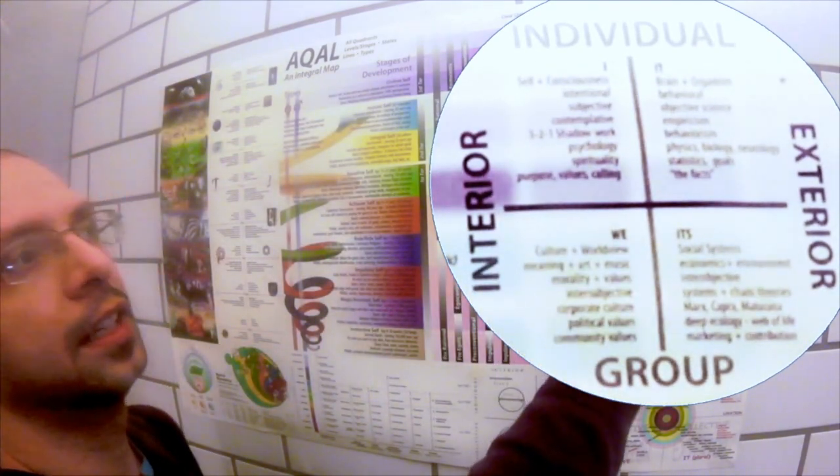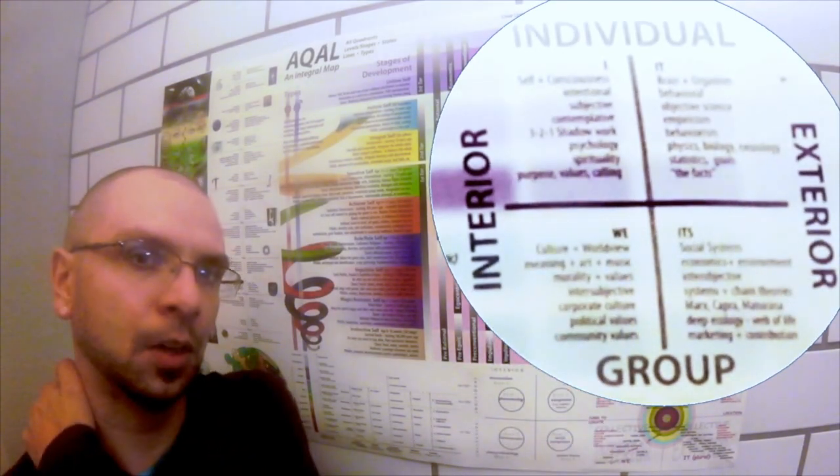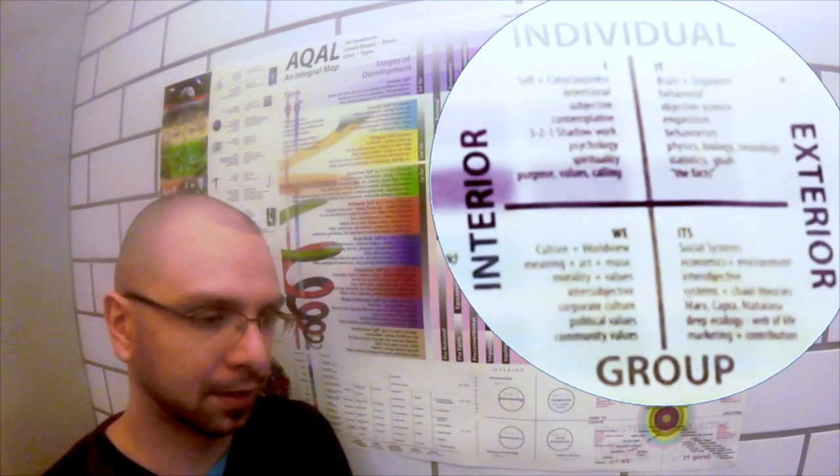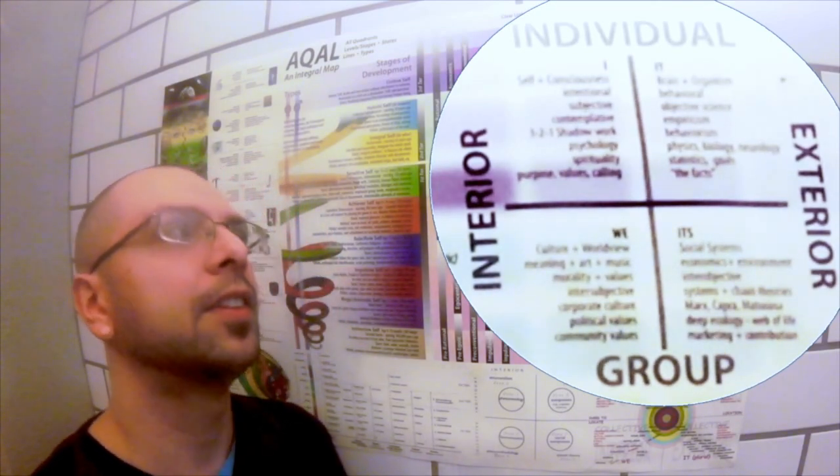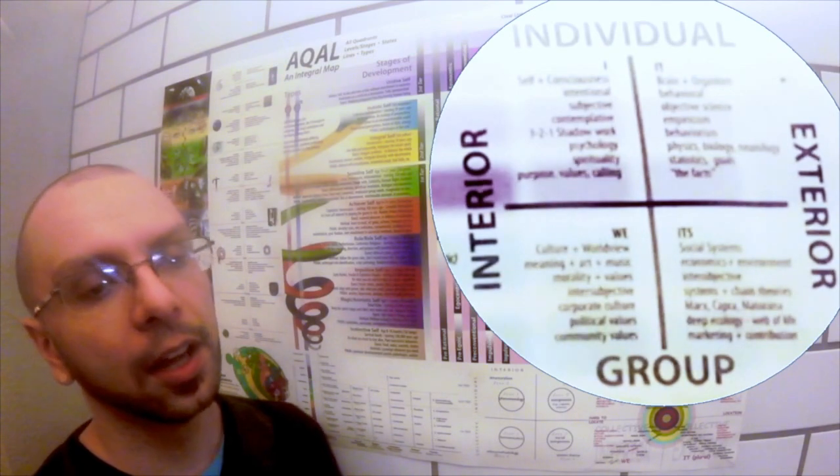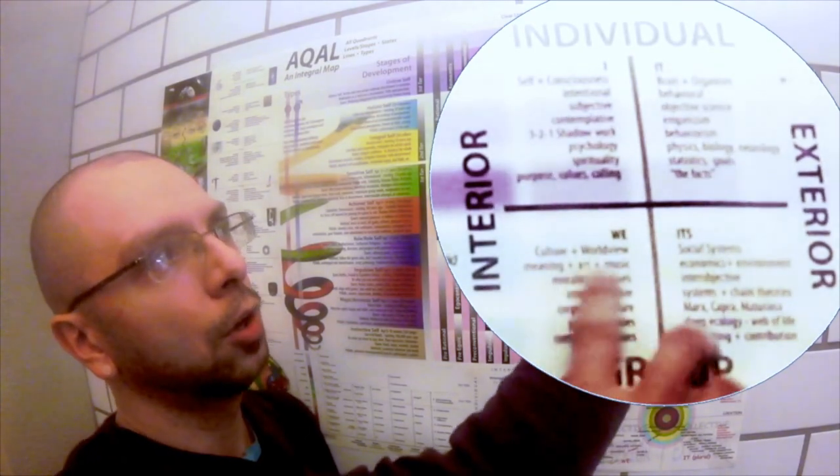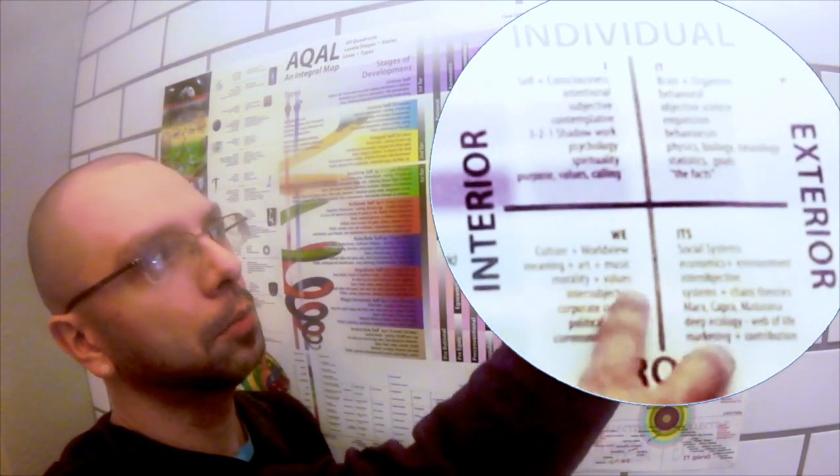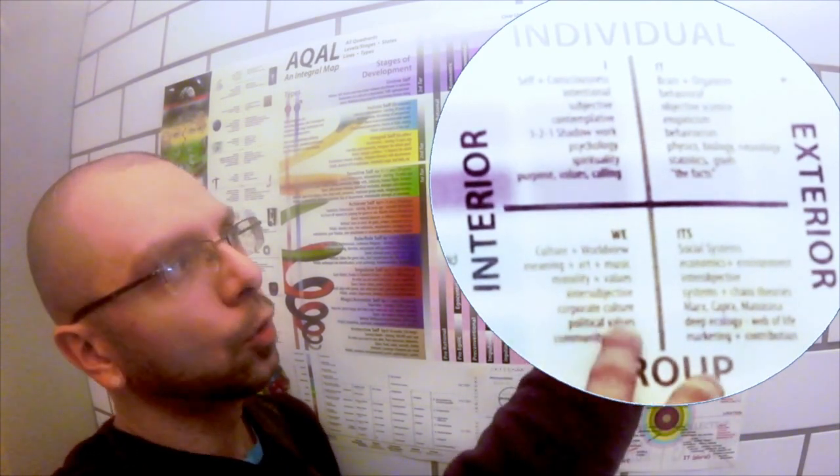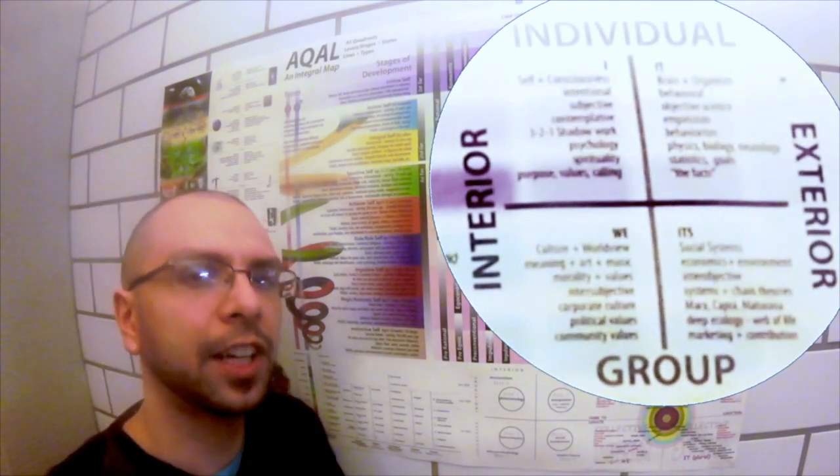And then down here is the relative second person we space. We implies agreement. So if you and I agree about something, then we say we agree and we feel like we're in some kind of a group. So we also implies values or meaning. And so here you have culture and worldview, meaning, art, music, morality, values, the intersubjective, corporate culture, political values, community values. Let me look at philosophy.